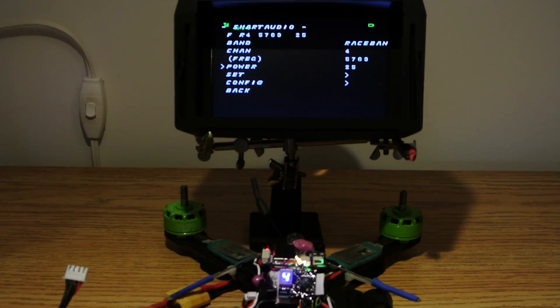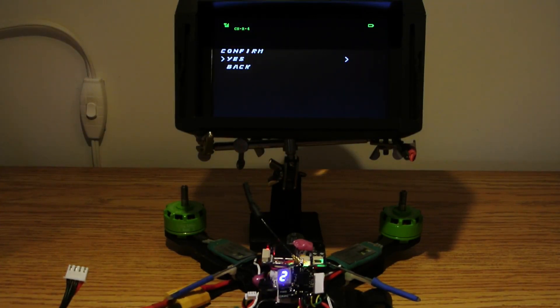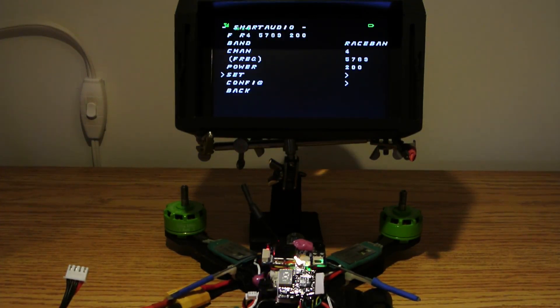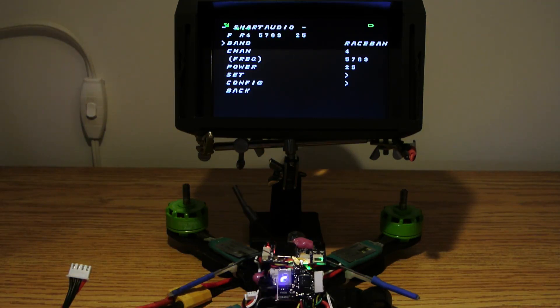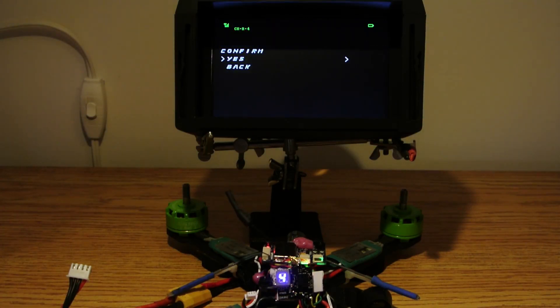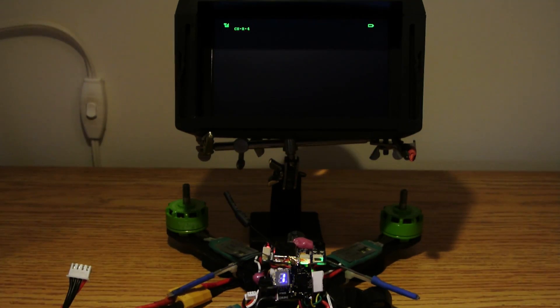To change a setting, change it in the menu, go to Set, Confirm, Yes, and you'll see the power level has now changed on the VTX. If we change the band and set, you can see the video transmitter changes frequencies.